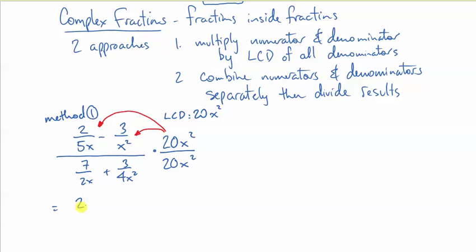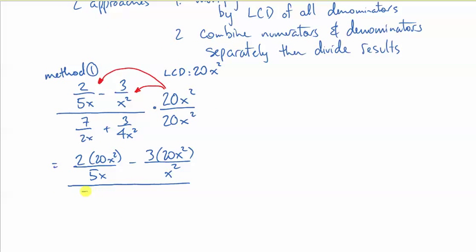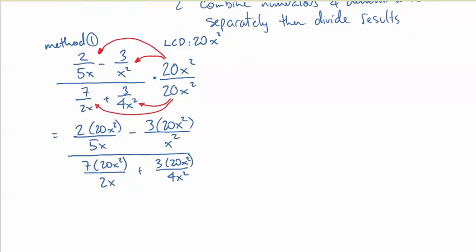So, I'm going to have 2 times 20x² over 5x and I'm going to have 3 times 20x² over x². That's my numerator. Now, I'm showing lots of work, more than what I would normally write down, just to make it really clear for you. There's your denominator first term and your denominator second term. And I did the same idea there. On the denominator, I took this 20x² and multiplied on this rational expression and this rational expression.